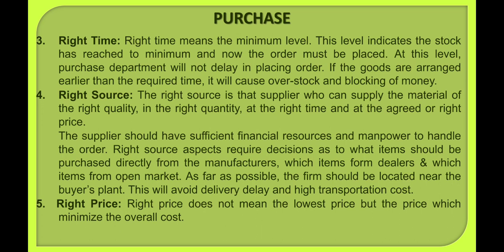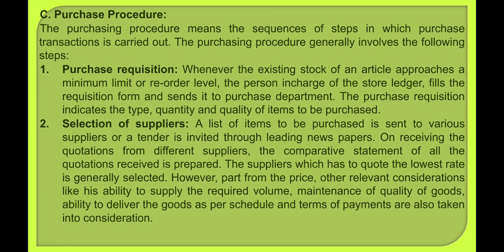Right price means you have to buy at the lowest price — that is, you get the material at the minimum cost. Now let's talk about the purchasing procedure. It is not necessary to follow every step for every material, but these are the steps that you follow to purchase. The first point in the process is the purchase requisition.